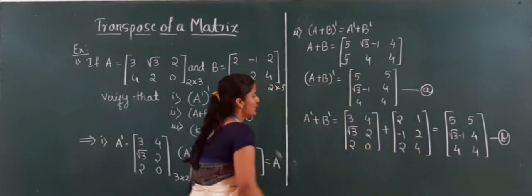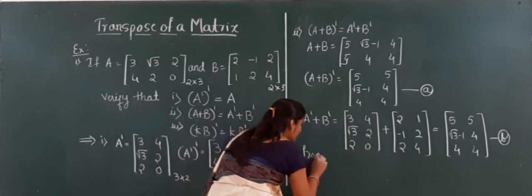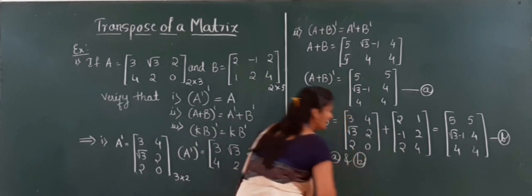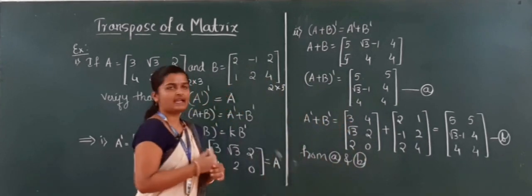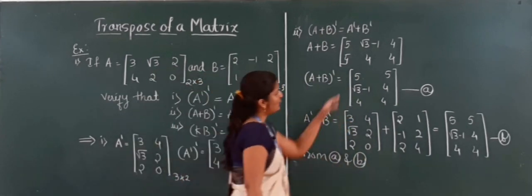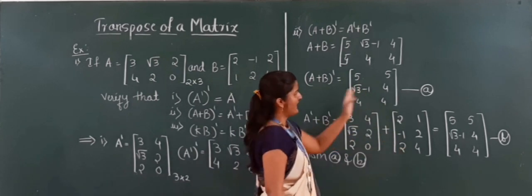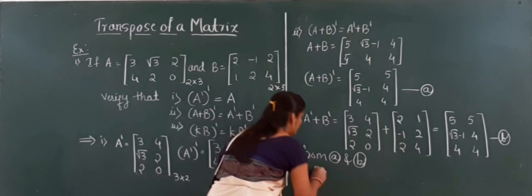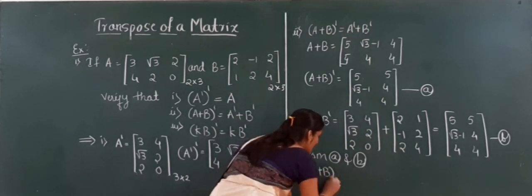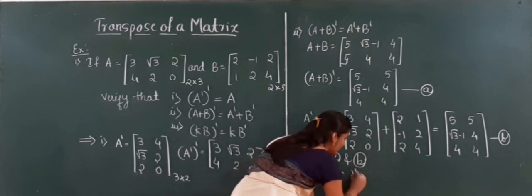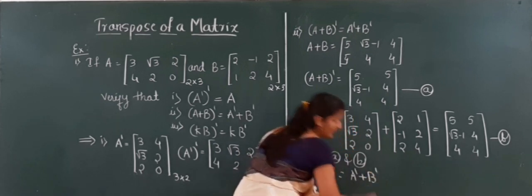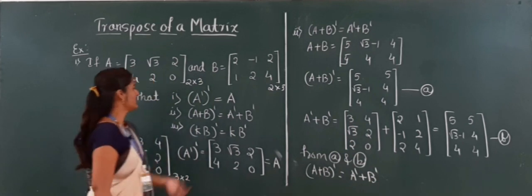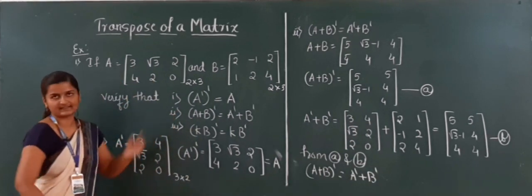Comparing the two results — (A + B)' and A' + B' — both matrices are identical. From this we can say that (A + B) whole transpose equals A transpose plus B transpose. Second sub-question is verified.